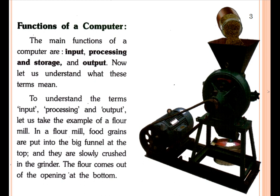You can see there is a funnel where grains are put in. After putting the grains, there is a small grinder that will crush your grains and mix it. And then at the bottom you will see there is a bucket. That means input kya hua — aapka grain hua; after that the grinder is your processing, your processor; and flour jo bahar aya — that is your output. Food grain is your input, grinder is your processor, and flour at the bottom is your output.